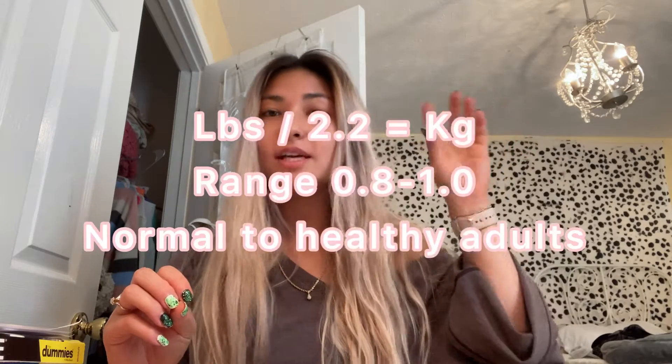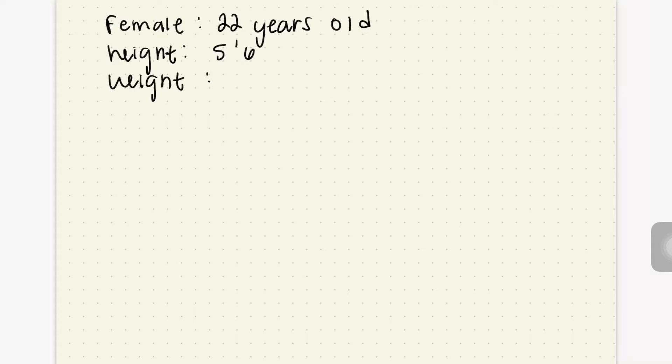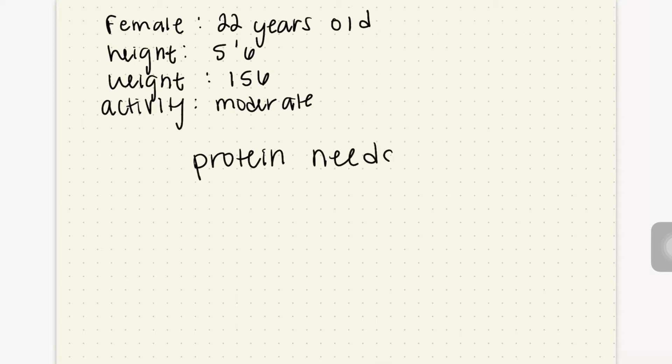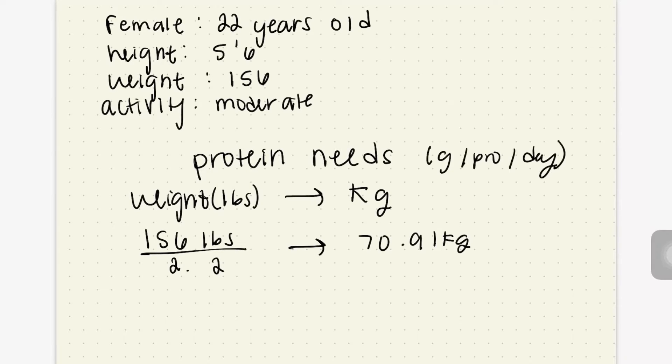So what you're going to do is take your weight in pounds and transfer it into kilograms, then multiply that by a range of 0.8 to 1.0. Using a range makes it easier to hit that marker instead of chasing one specific number. I wrote out my information: I'm going to take my 156 pounds, convert it to kilograms, and multiply within that range. That gives me a daily protein target of about 56.7 to 79 grams.